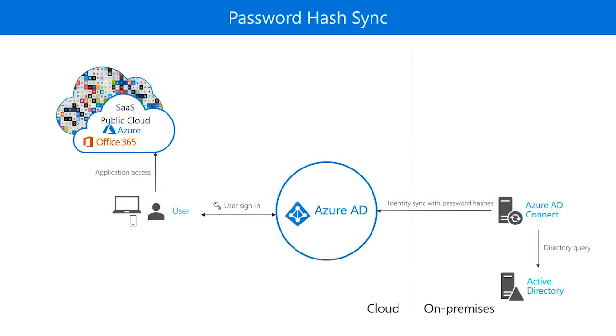When the user is actually trying to sign into Azure AD, they plug in their username and password into Azure AD. We apply the same hashing algorithms as described before, and then we compare the username and the hashed value and try to match it with the username and the stored hash value in Azure AD. If there is a match, then the user is successfully signed in. As you can see, during authentication, there is no dependency on the on-premises infrastructure.